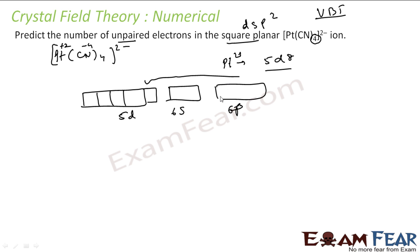Now, it says that it is dsp2 hybridization. These one, two, three, four orbitals are used. That means all the electrons are in these four orbitals only, and we have 8 electrons to fill.